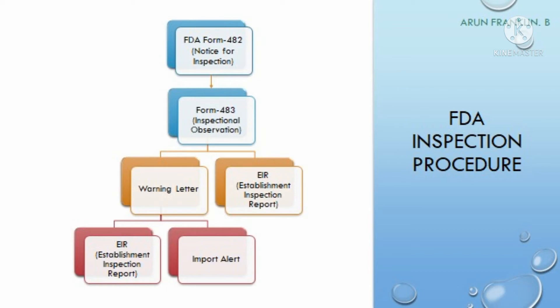With the response, if the FDA is satisfied they will provide the EIR, which is called the Establishment Inspection Report. If they are not satisfied, they will issue a Warning Letter. Once the Warning Letter is received by the pharmaceutical company, it is a serious warning that they cannot market their pharmaceutical products in the US. The pharmaceutical company has to respond to the Warning Letter within 15 days.